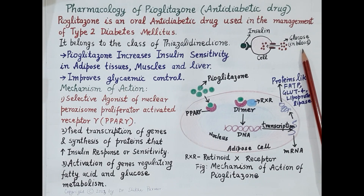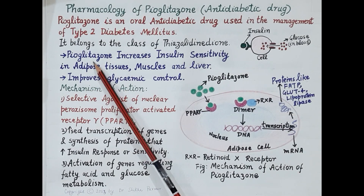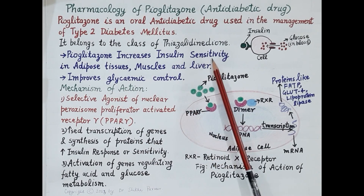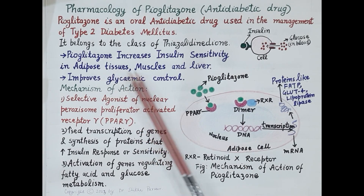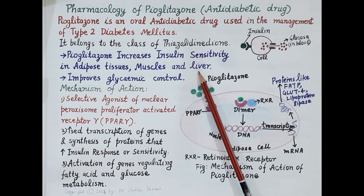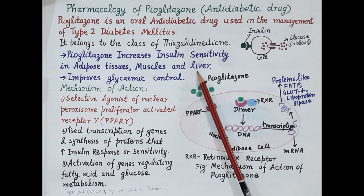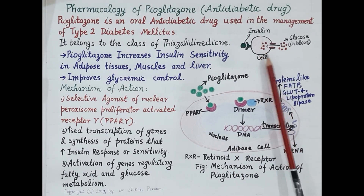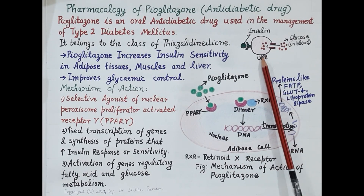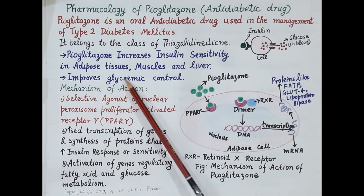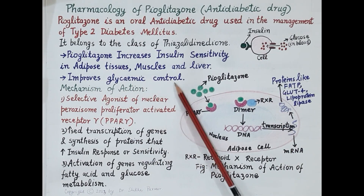Pioglitazone is an oral anti-diabetic drug that increases insulin sensitivity — or in other words, reduces insulin resistance — in the adipose tissues, muscles, and the liver. It increases the effectiveness of insulin, so uptake of glucose by the body cells improves, and thus pioglitazone improves glycemic control.